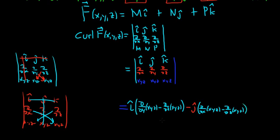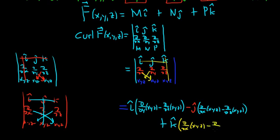The last term is plus k-hat. Crossing out the corresponding row and column, you have ∂/∂x of (xyz) times ∂/∂x of (xyz) minus ∂/∂y of (xyz) — so it's this times this minus this times this, giving us the k-hat component.